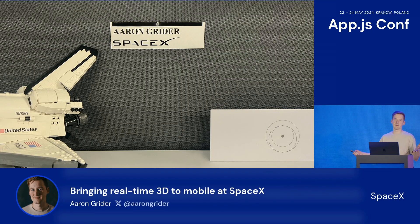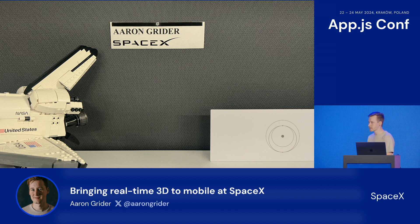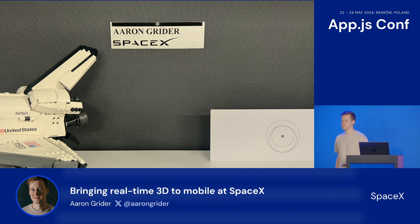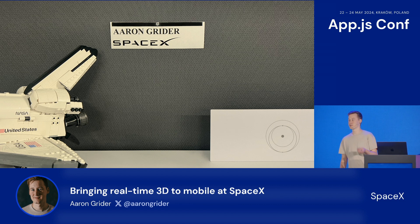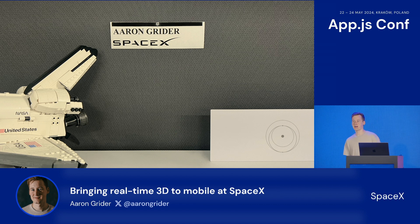I started my career in native iOS and Android development, but I've since focused on React Native. I've done some cross-platform work at Microsoft. Most recently, before SpaceX, I was at Tesla working on the Tesla mobile app, which is also a really cool example of React Native and 3D — definitely recommend checking it out. Now I'm a software engineer at SpaceX, and I work on the Starlink user experience team.